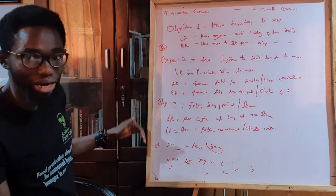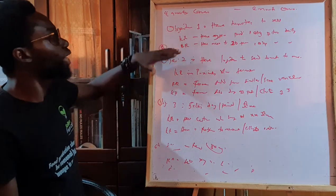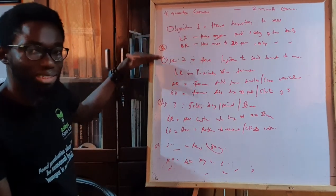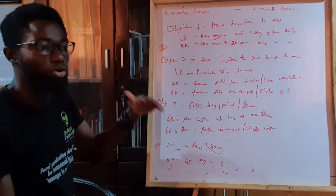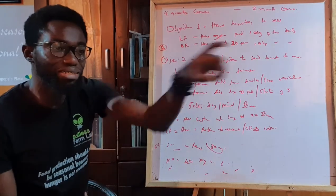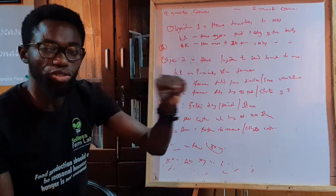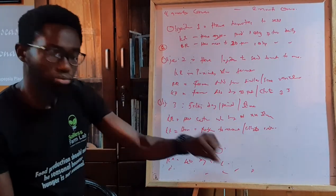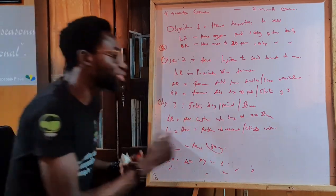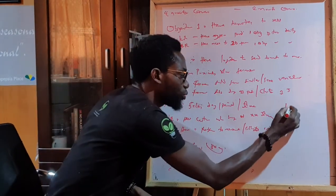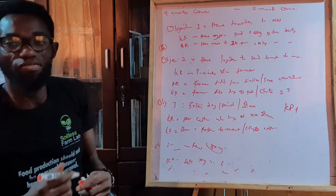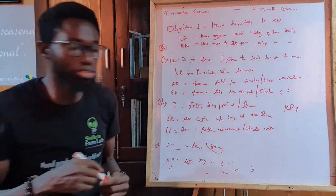Now when you have written out these objectives — this is what I want to achieve, and these are the key results that would help me achieve them — next is to put in what we call KPIs: Key Performance Indices.